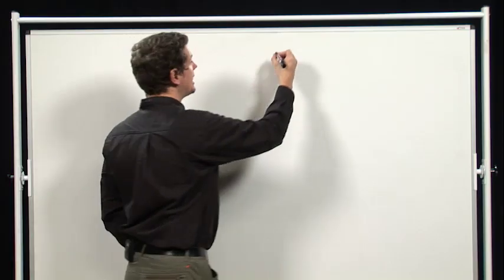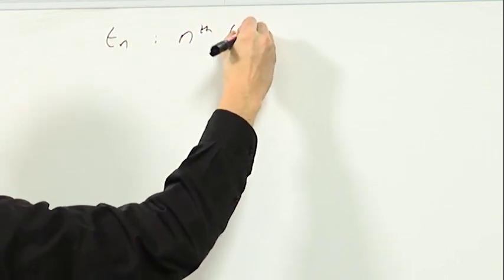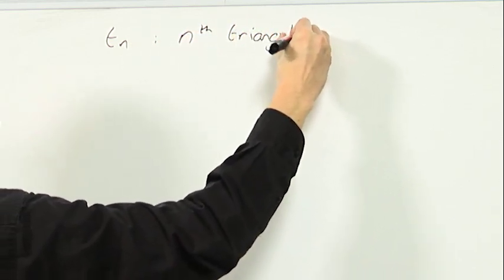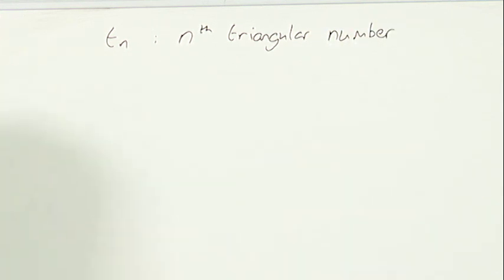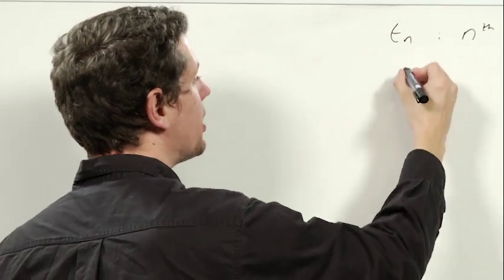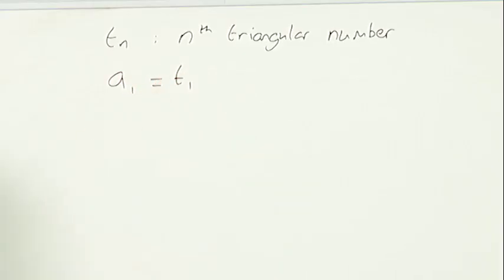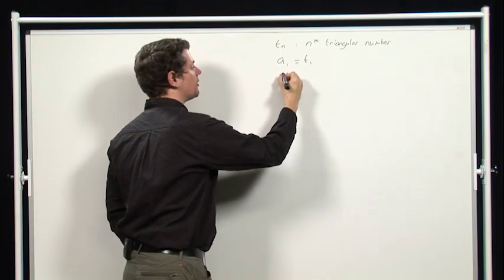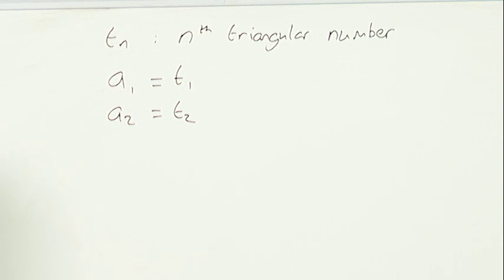Now let's look at what this tells us. I'm going to write Tn for the nth triangular number. Now the question tells us that a1 is 1. In other words, that it's T1, the first triangular number. And then we worked out that a2 had to be T2, which is 3, the second triangular number.